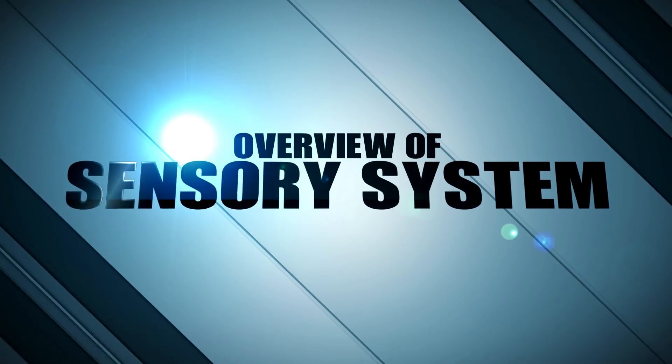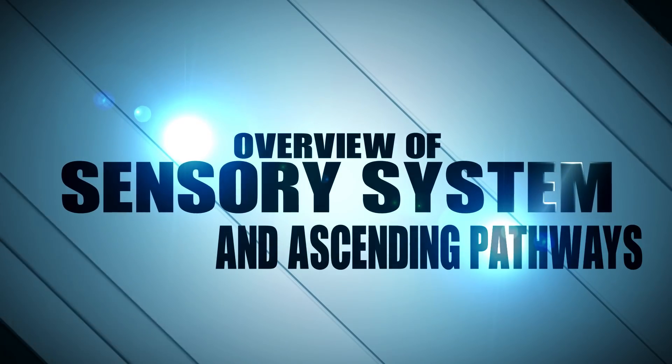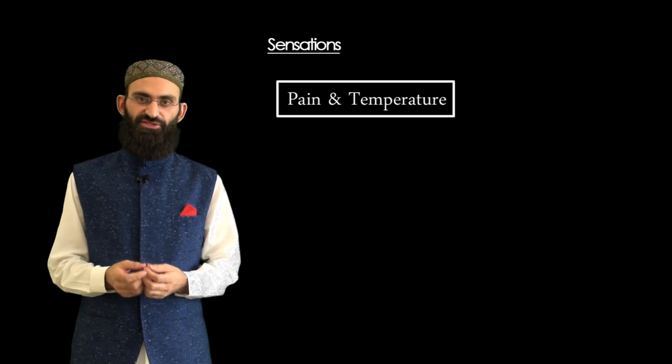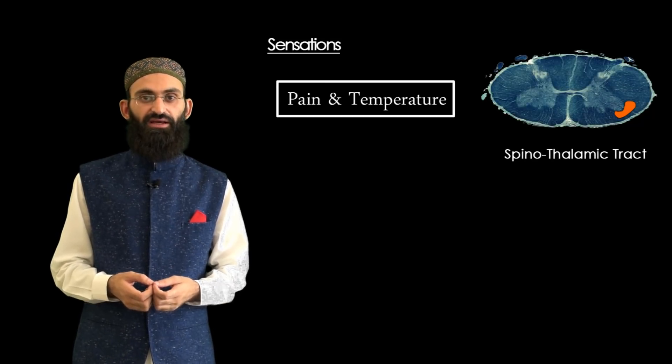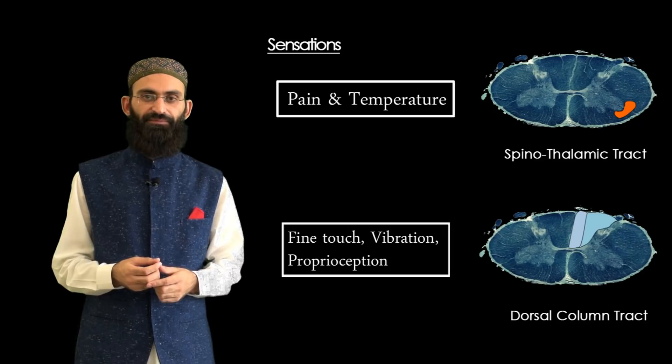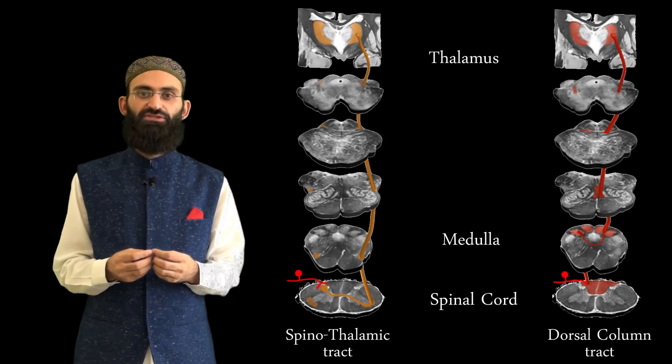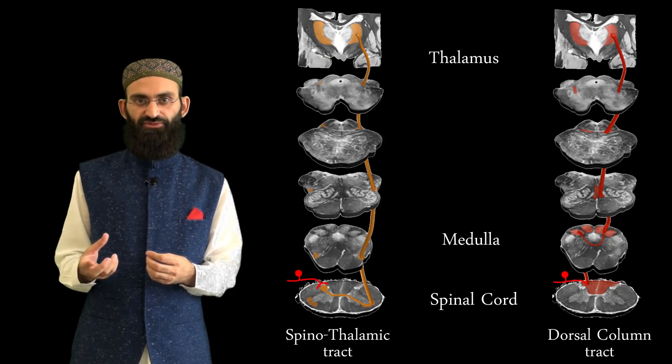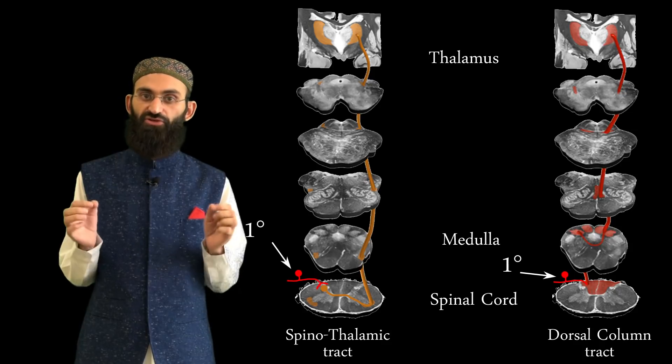Before embarking on detailed discussion of motor weakness, let us briefly discuss the sensory system and ascending pathways. Pain and temperature sensations are carried through the spinothalamic tract, while fine touch, vibration, and proprioception are carried through the dorsal column tract. There are three orders of neurons in sensory pathways, and first-order neurons are peripherally located — for both the spinothalamic tract and dorsal column tract, first-order neurons are located in the dorsal root ganglion.